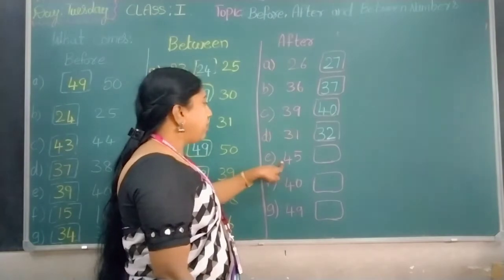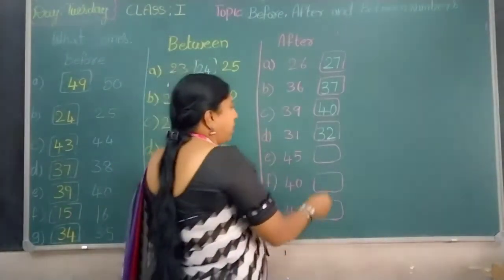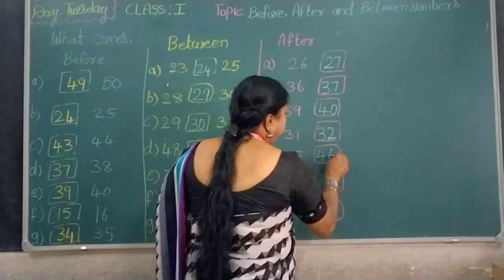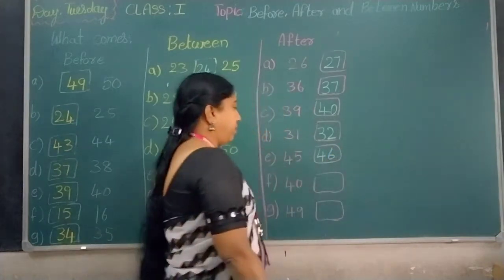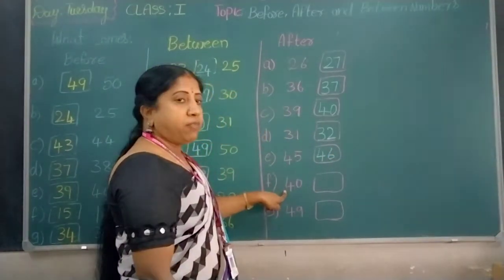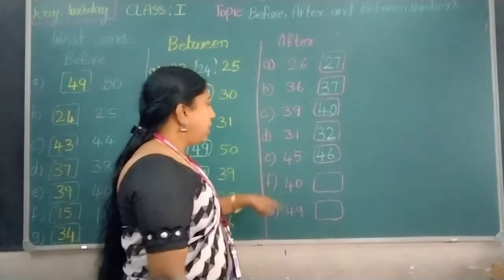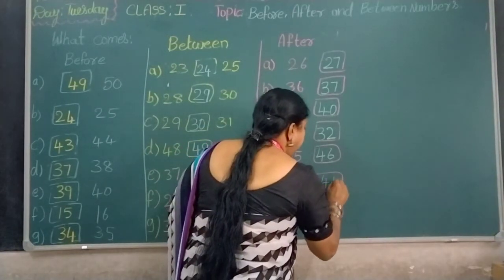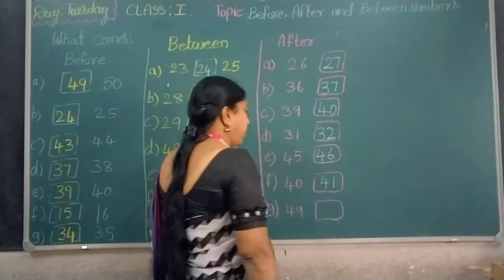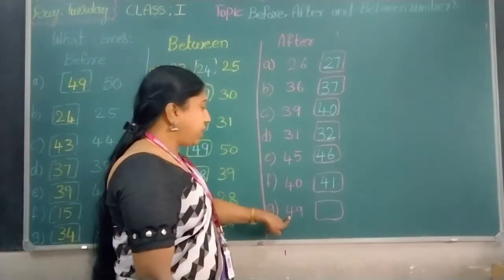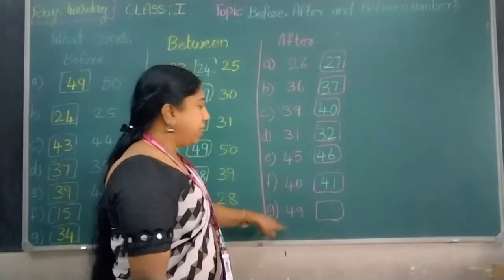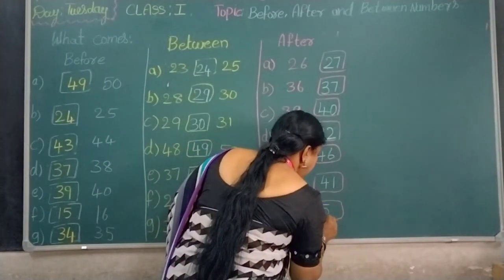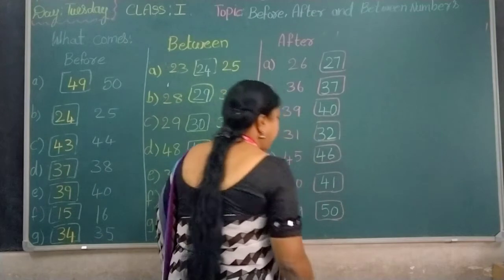What comes after 45? Number 46 comes after 45. What comes after 40? Number 41 comes after 40. What comes after 49? Number 50 comes after 49.